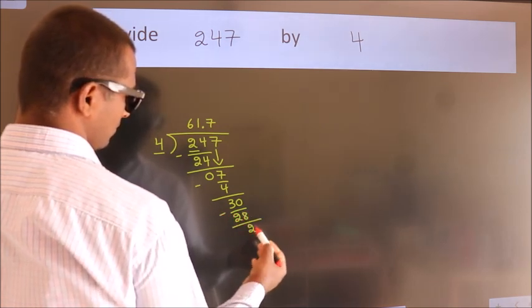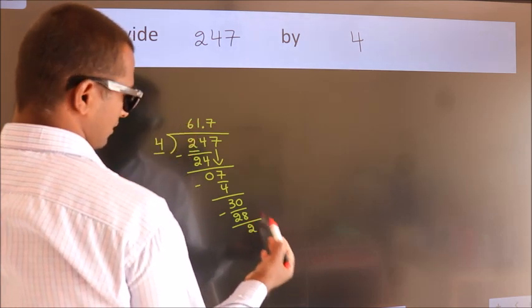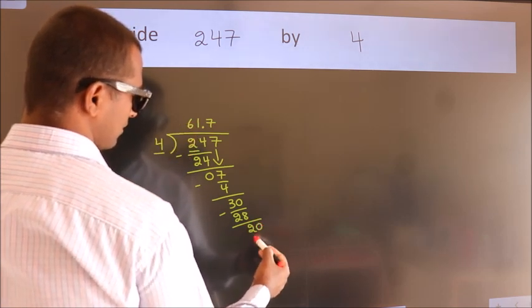We get 2. After this we already have the decimal. So directly take 0. So 20.